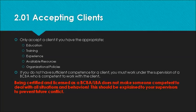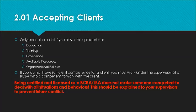We often think about education, training, and experience, but I don't think as many people consider available resources and organizational policies. For example, if a client has very little generalization skills and has already received intensive instruction in clinic one-on-one without generalizing, and your organization dictates that you are only able to provide one-on-one services in clinic, then you might need to say you would not be appropriate for this client because your role limits your ability to help with generalization in the home or community.